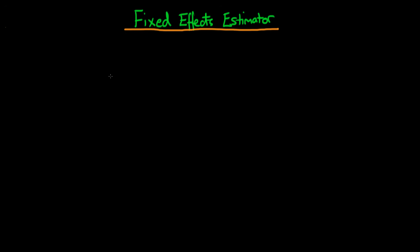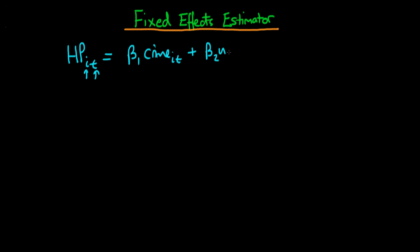In this video I want to talk about another type of estimator which also has the effect of removing the problems of unobserved heterogeneity. Let's stick with the previous example whereby we had the house price in a given city i at time t, and we wanted to find out what the effect of the crime rate in that city at time t was on house prices. I'm also going to include another explanatory factor: the unemployment rate.